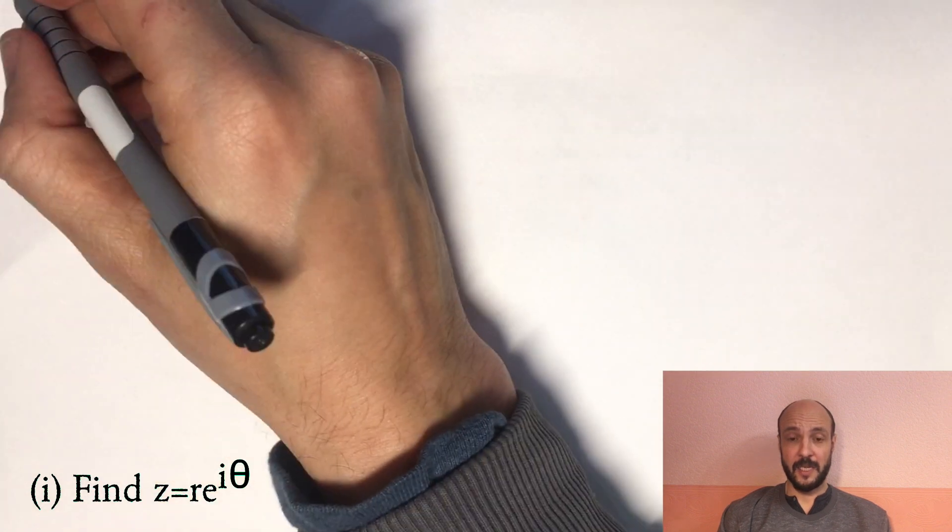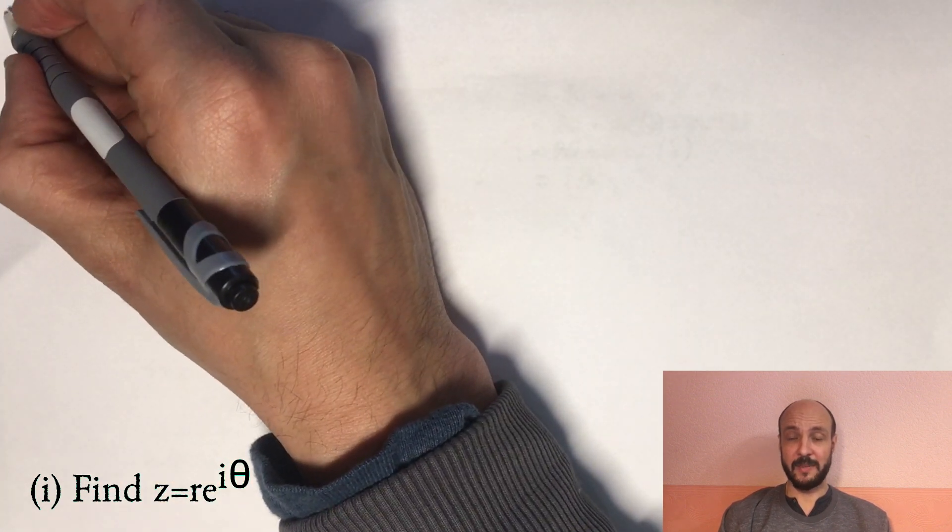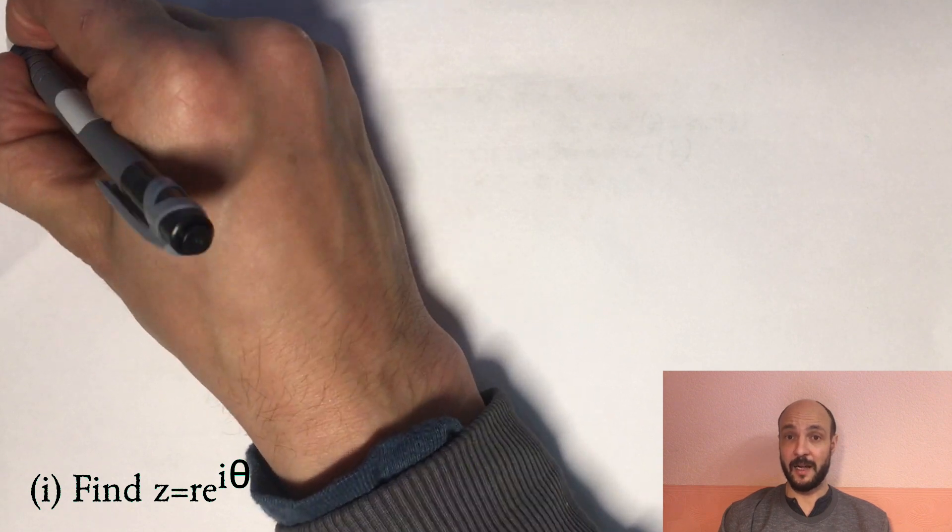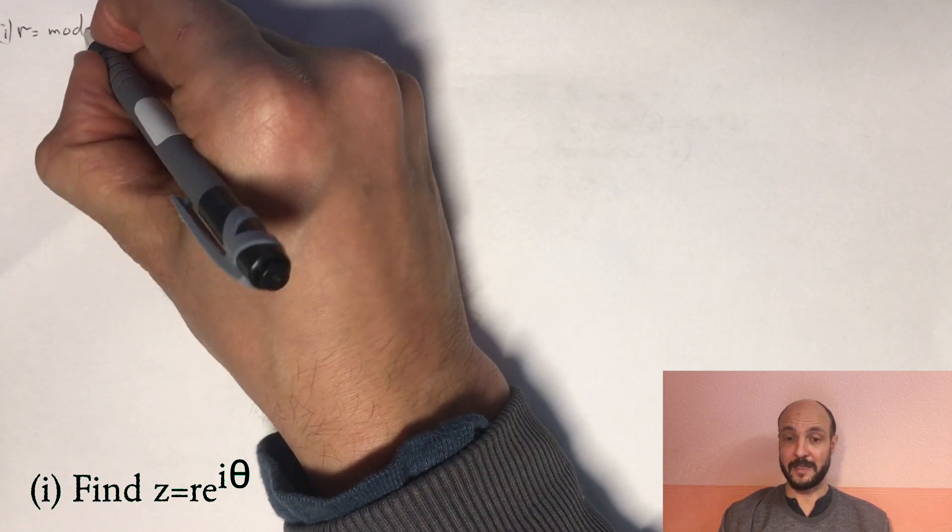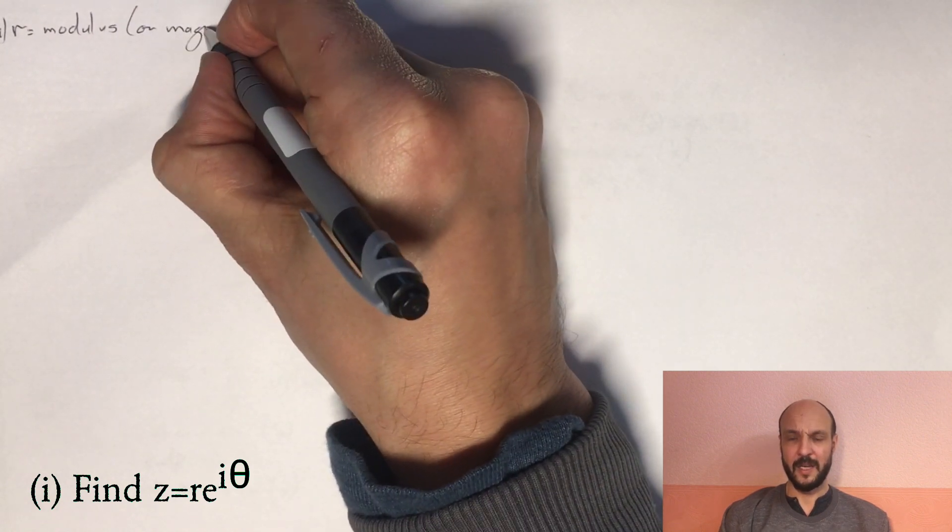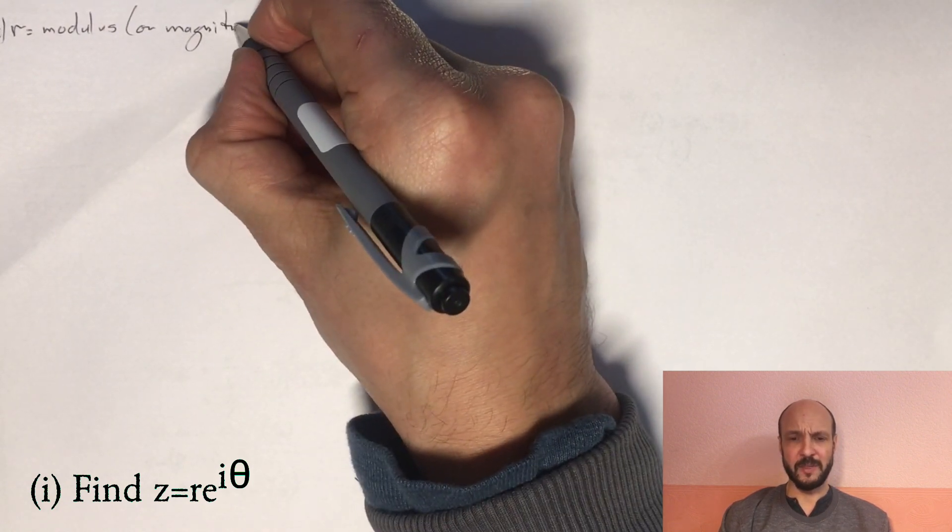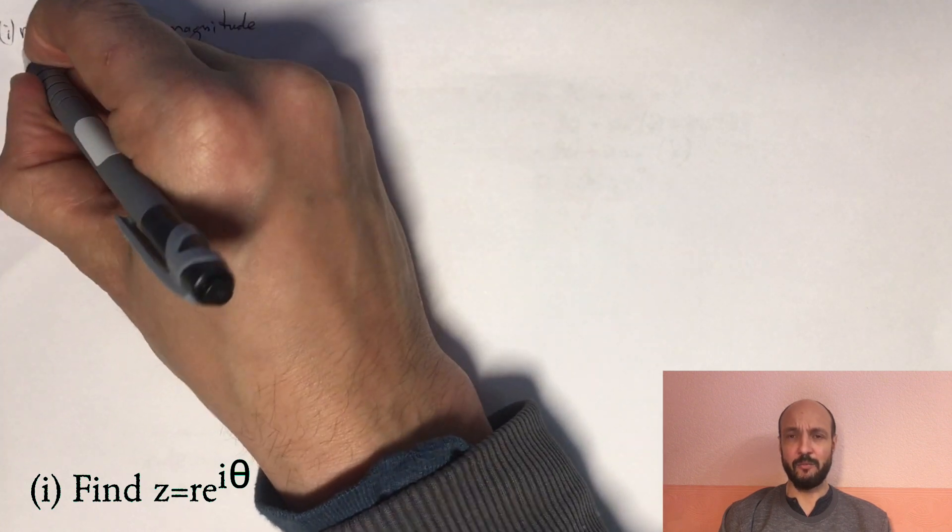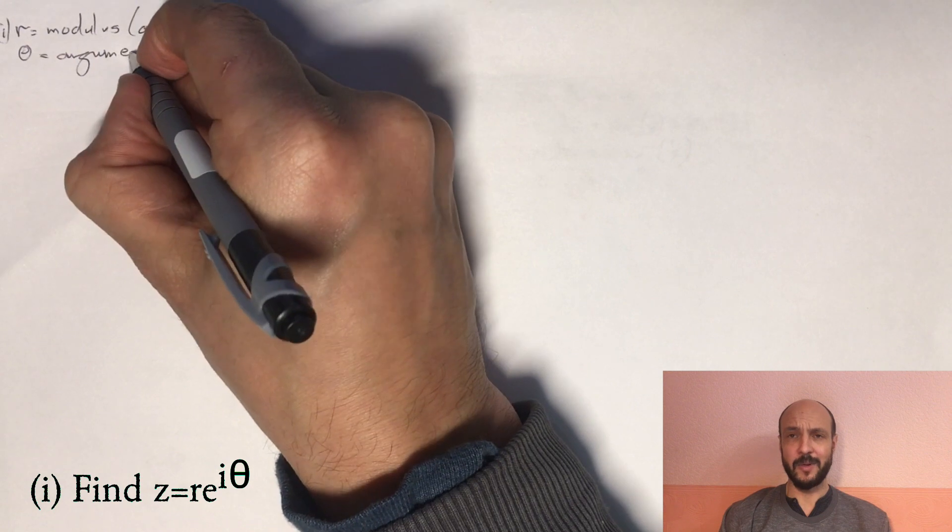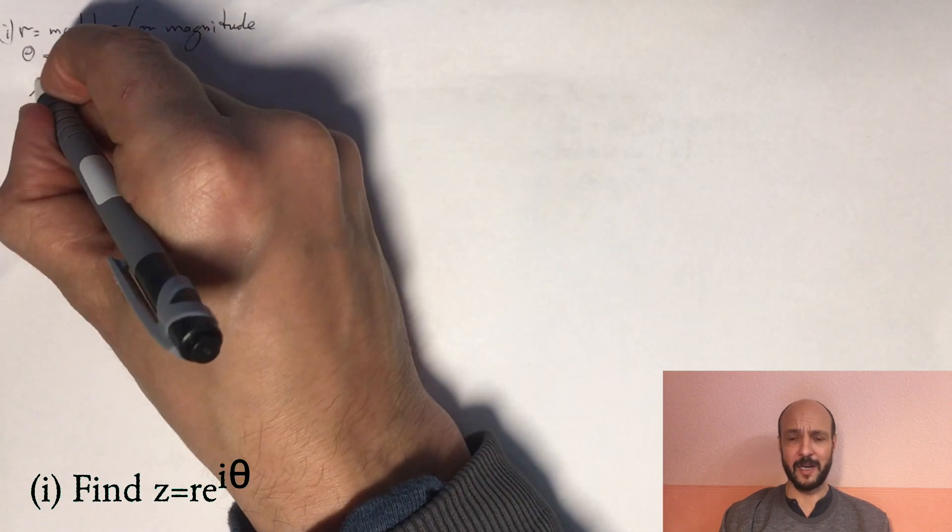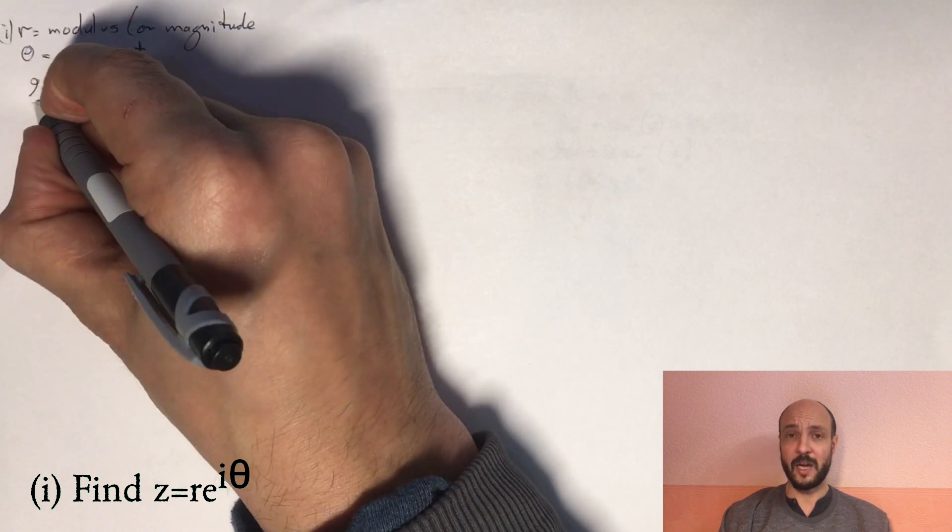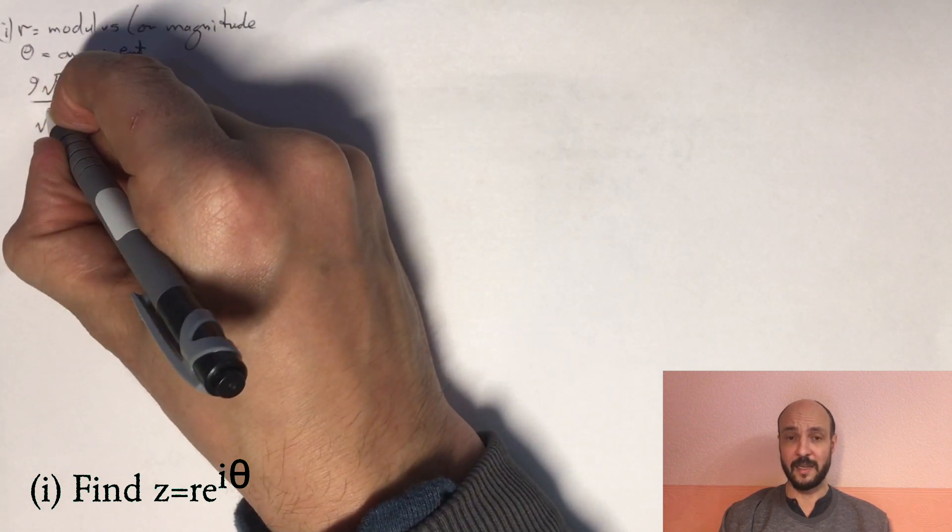So for the first part, in order to put our complex number into exponential form, we'll have to find r, which is the modulus of the complex number, and we'll have to find theta, which is the argument of the complex number. But before we do that, we've got a bit of a messy complex number with √3 - i on the denominator there. We don't really want imaginary parts on our denominator. So in order to get rid of that, we'll use our difference of two squares formula.